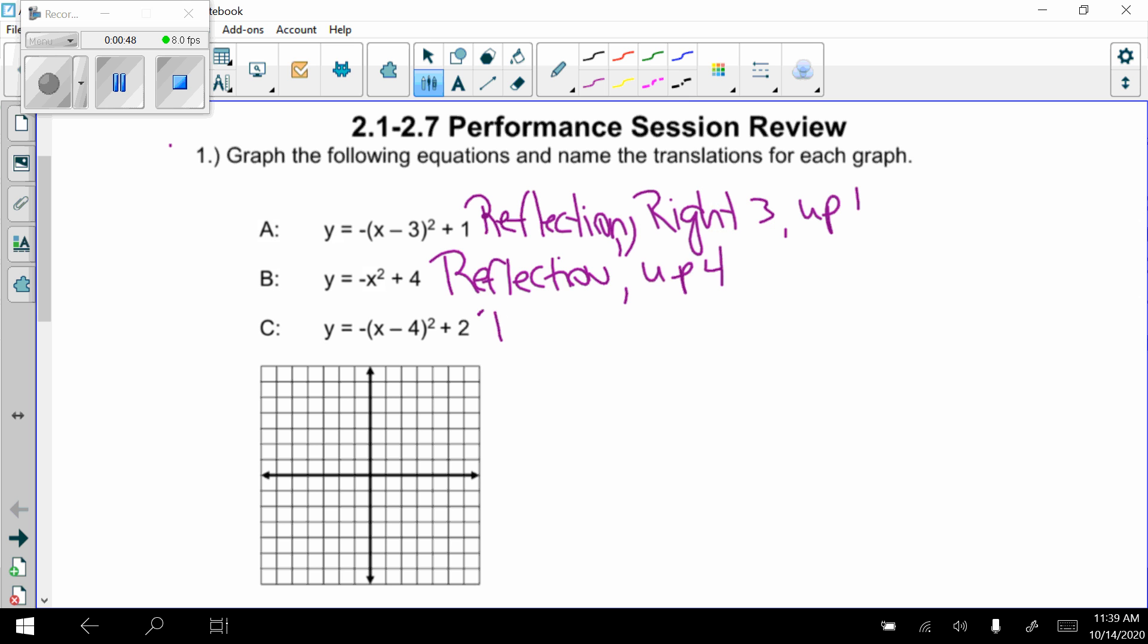And finally, C, again, that negative out front, I see I have a reflection. In parentheses, x minus 4, so it goes right 4, and up 2.